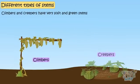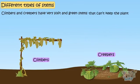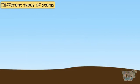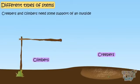Climber and creepers have very soft and green stems that can't keep the plant upright. Creepers and climbers need some support of an outside object to climb up or crawl along.